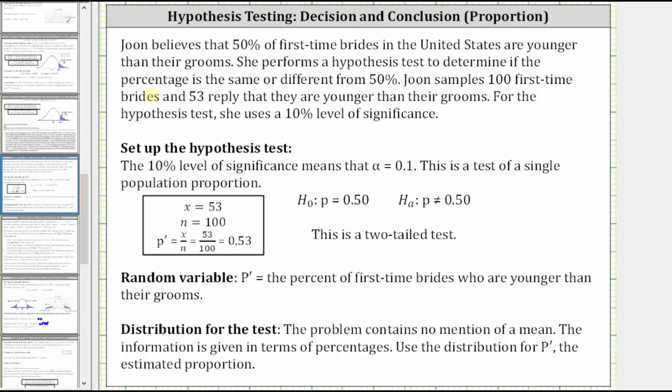Next, June samples 100 first-time brides and therefore the sample size N is 100. 53 reply that they are younger than their grooms and therefore X, the number of successes, is 53, which indicates P prime, the sample proportion, is equal to 0.53.